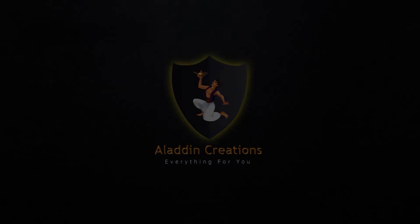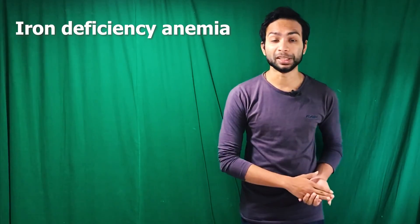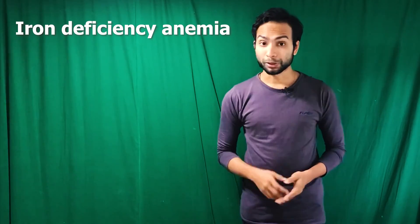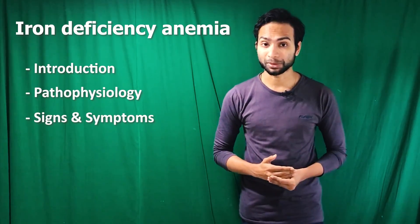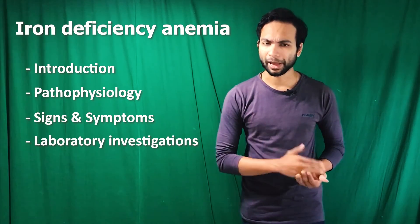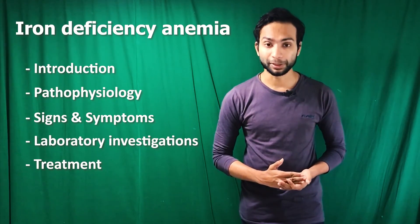Welcome to Aladdin Creations. My name is Kavindu. Today in this video we are going to see the most common type of anemia in the world — iron deficiency anemia. It occurs when your body doesn't have enough of the mineral iron. We will discuss introduction, etiology, pathophysiology, signs and symptoms, laboratory investigations, and treatment of iron deficiency anemia in this short video.